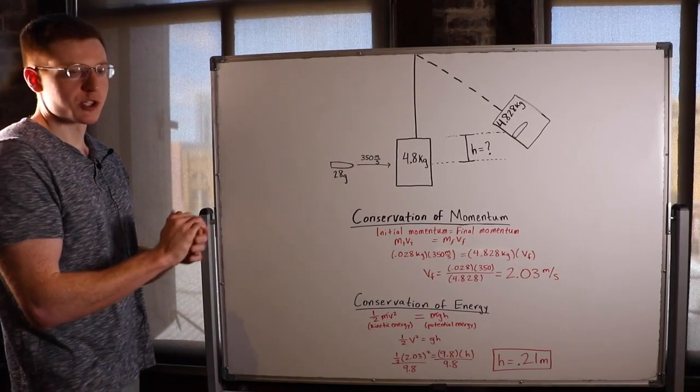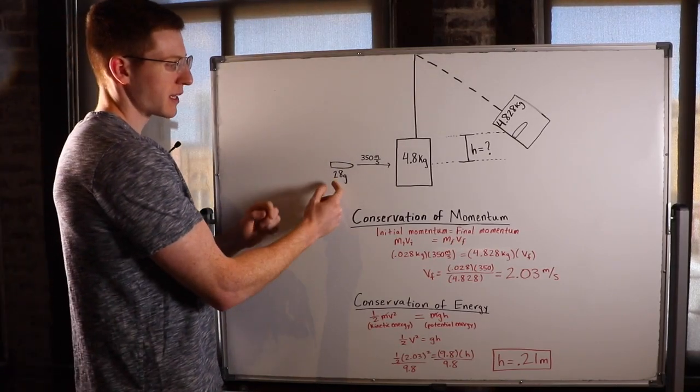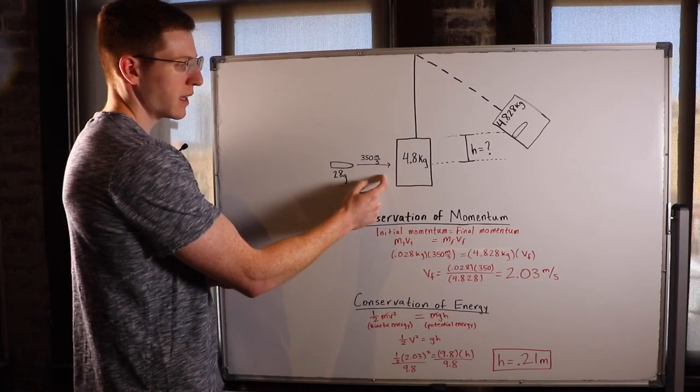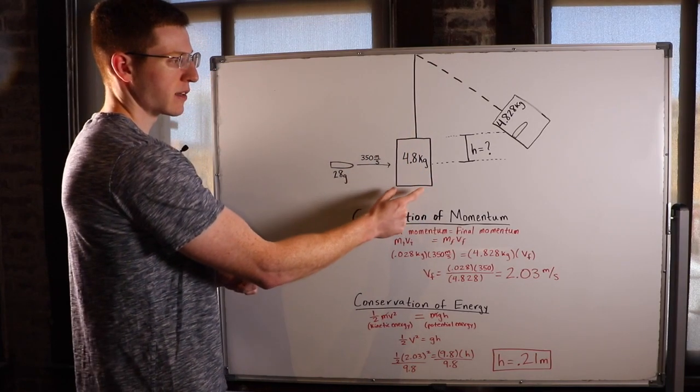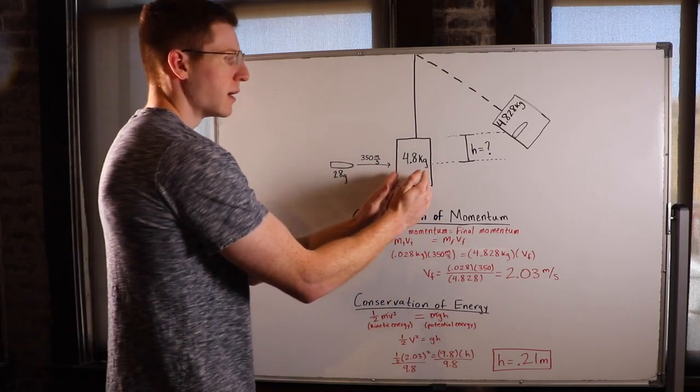Hey guys, I've got a problem here in which a 28 gram bullet is traveling at 350 meters per second. It then strikes this 4.8 kilogram block hanging from the ceiling and then the bullet and the block combine and